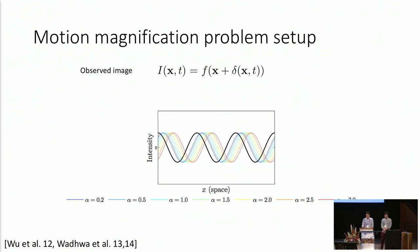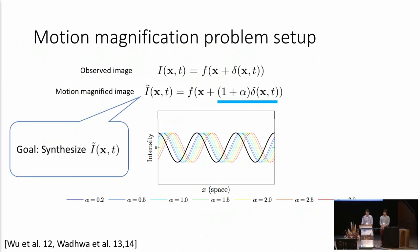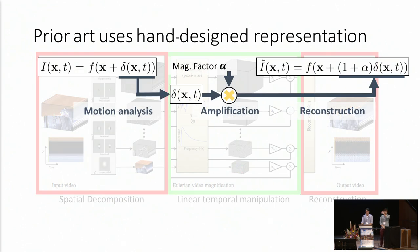To explain how magnification techniques work, let's consider this simple example. The motion of a 1D video I is represented by displacement delta, and the motion magnified video is generated by scaling the displacement delta, giving us the end result I-tilde. Prior to manipulating handcrafted features through classical signal processing techniques, these magnification methods are divided into spatial decomposition, temporal filtering, and reconstruction. To manipulate the displacement delta, we first extract the displacement by some motion analysis, then magnify the video by scaling the motion and adding it back to the original sequence.